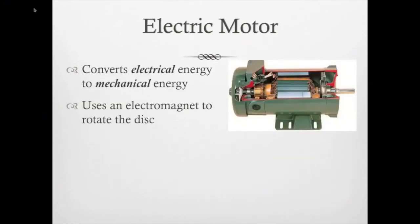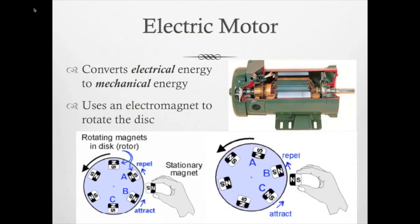Electric motors. Electric motor, here's the key: it converts electrical energy into mechanical energy. So it's taking the current and turning it into mechanical energy, mechanical work. It uses an electromagnet to rotate the disc. You can see in the picture beneath that the rotating magnets in the disc are attracted and then repelled by the spinning of the magnet.